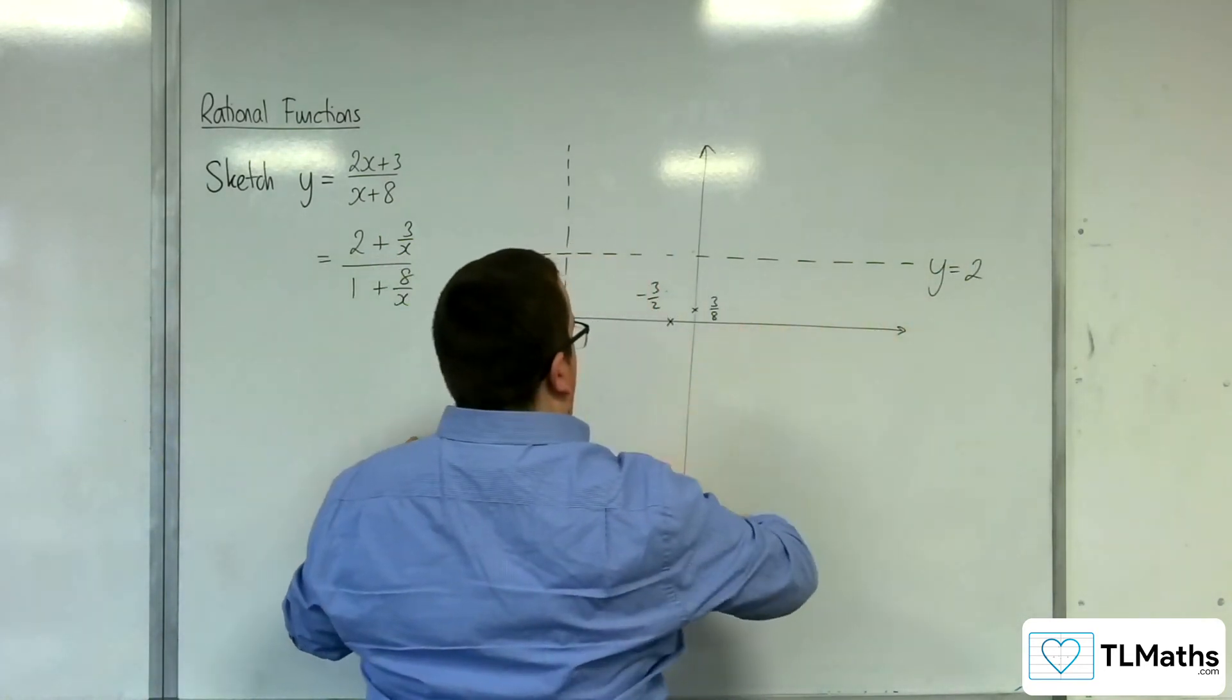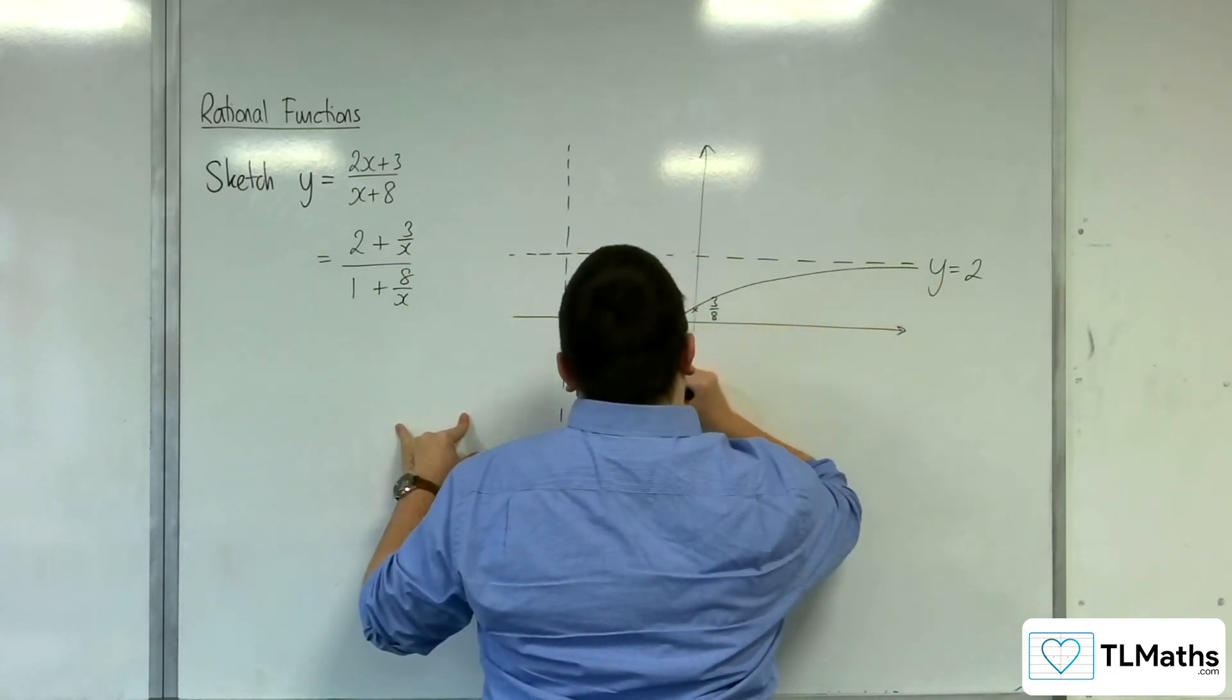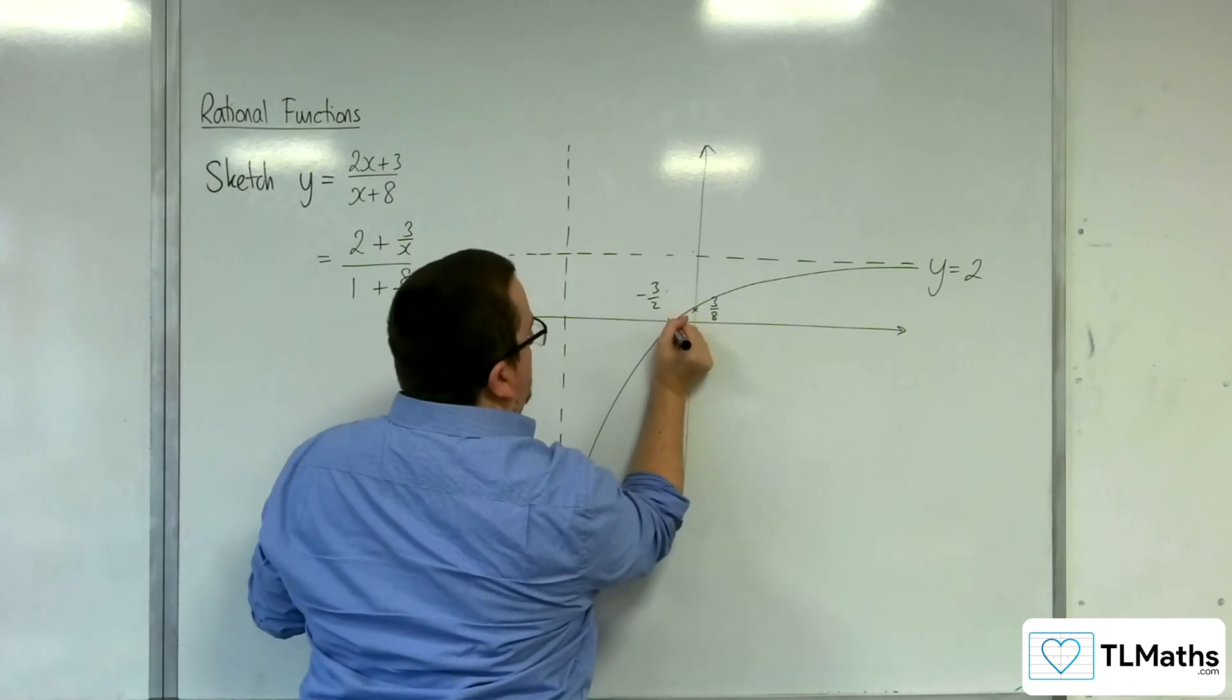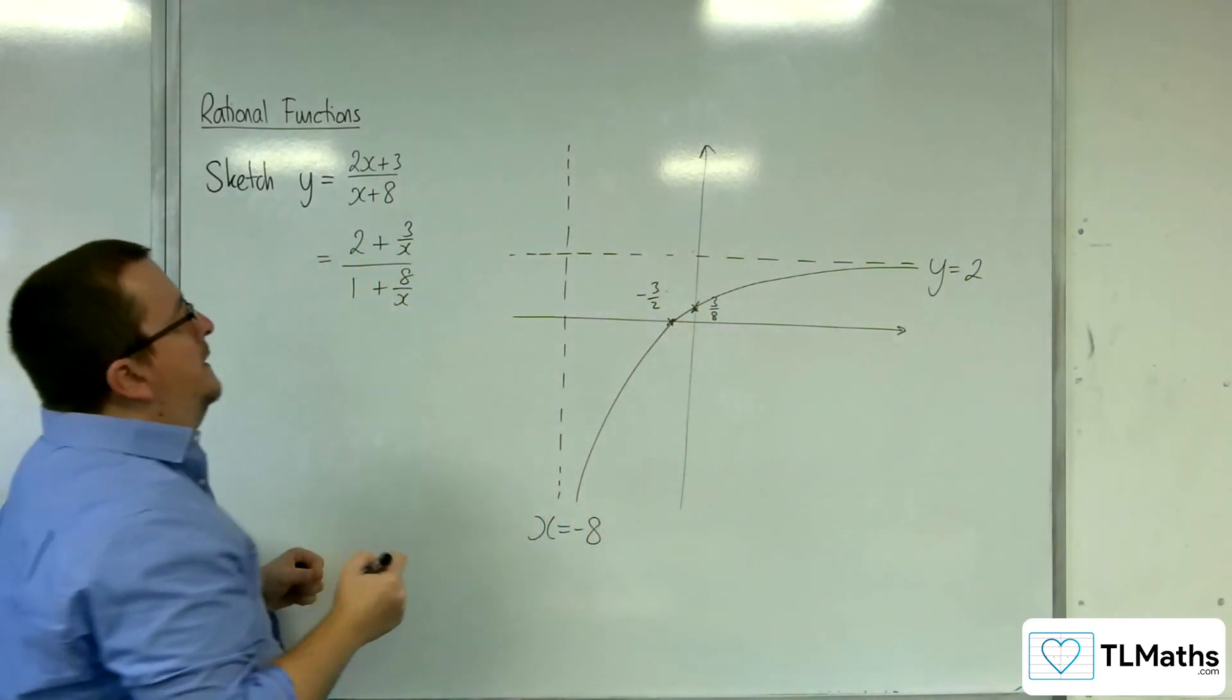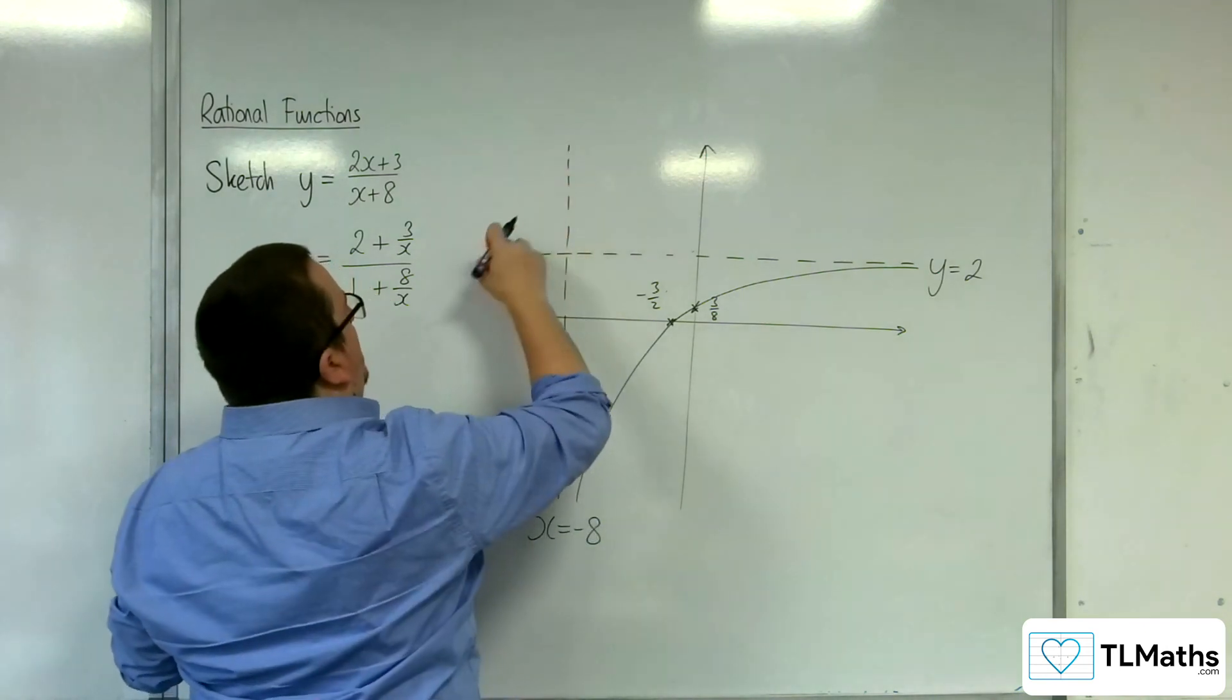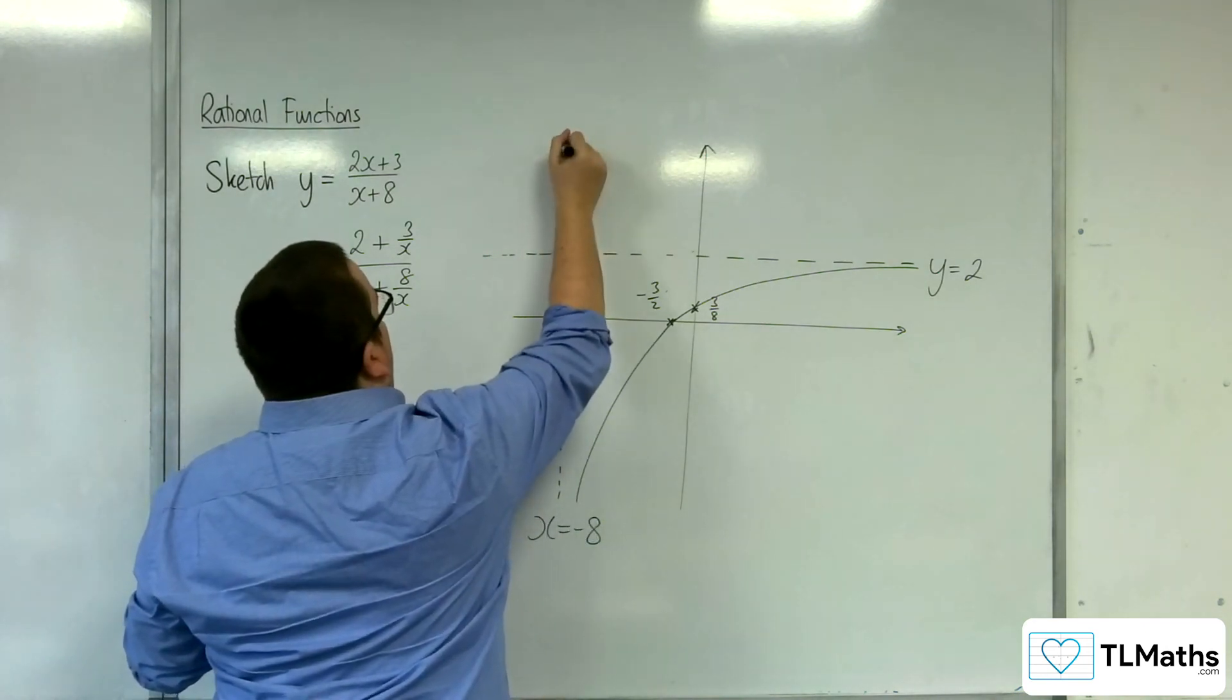So we've got the curve doing something like this. I'll just make sure they connect the dots like that. And then the rest of the graph must be up here in order to avoid the x-axis.